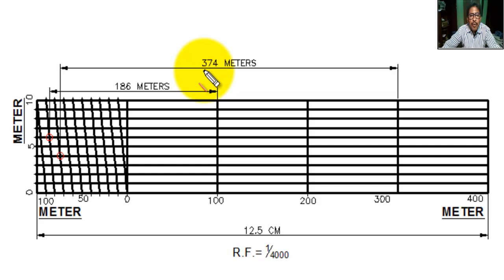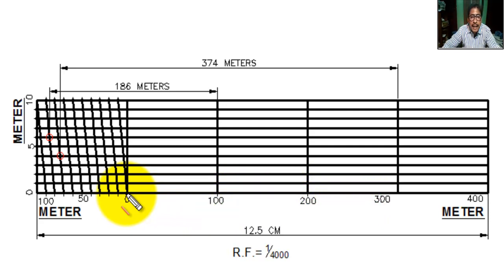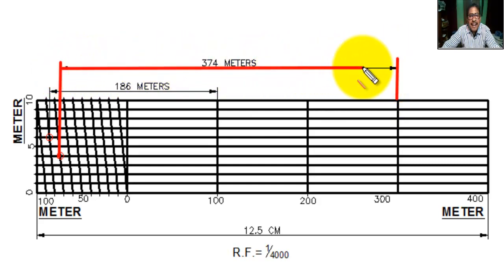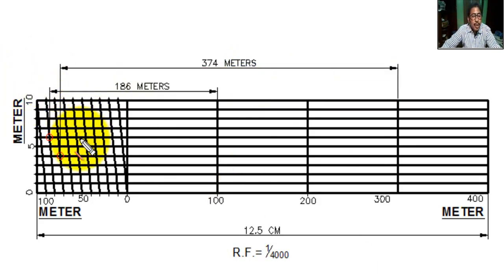Now we mark on this scale a distance of 374 meters. 374 means: 300 on the main division (300 meters), 70 meters on the subdivision — 1, 2, 3, 4, 5, 6, 7 — and 4 meters on the diagonal scale — 1, 2, 3, 4. From this point we draw the line, and from this point we draw the line. This is the 374 meters.